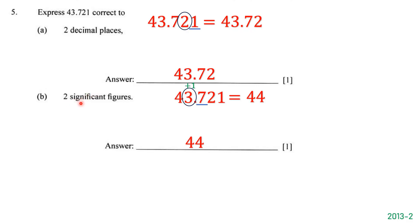Now we want to write 43.721 correct to two significant figures. This number has five significant figures: 4, 3, 7, 2, and 1 — all non-zero digits are significant. The first significant figure is 4 and the second is 3, so we circle 3 and underline 7 to its right. Since 7 is greater than 5, we round up: 3 plus 1 is 4. We drop the decimal parts. The answer is 44. Note: there are cases where zero can be significant, but in general all non-zero digits are significant.